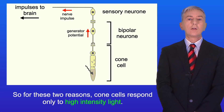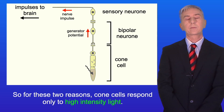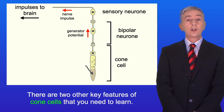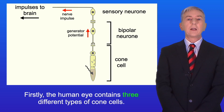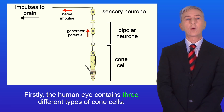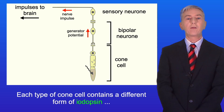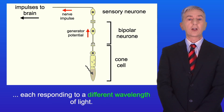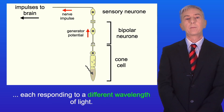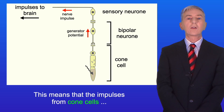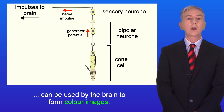So for these two reasons, cone cells respond only to high intensity light. There are two other key features of cone cells to learn. Firstly, the human eye contains three different types of cone cells, each containing a different form of iodopsin, each responding to a different wavelength of light. This means that the impulses from cone cells can be used by the brain to form colour images.